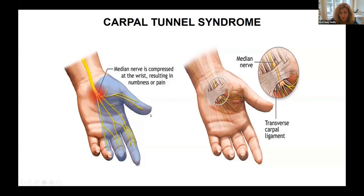Carpal tunnel syndrome is very common in certain forms of TTR amyloid — both the wild type and some forms of the hereditary type — and it can be seen in up to 70% of patients. It's much more commonly bilateral (both hands) than in the normal population, where it's more commonly just one hand, though neither rule is absolute.